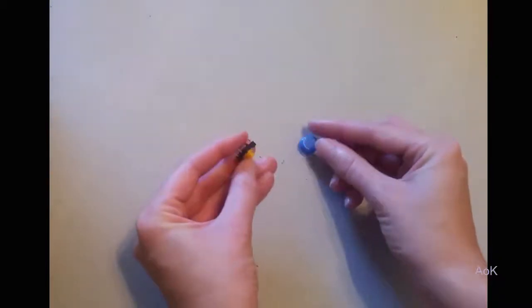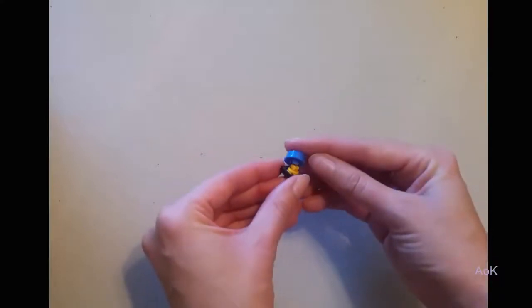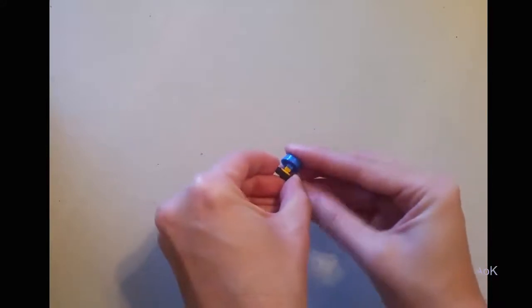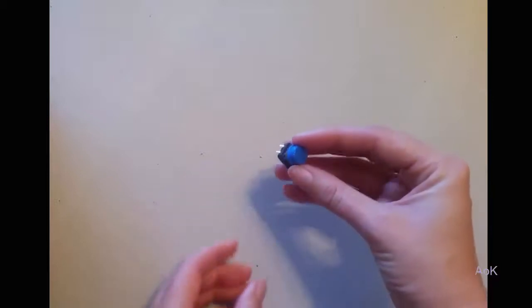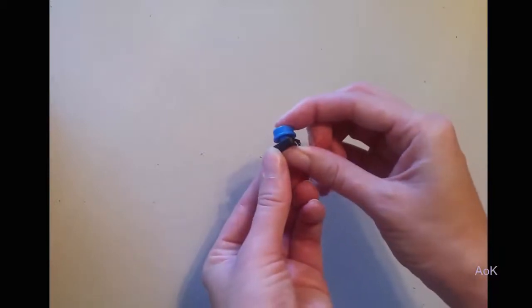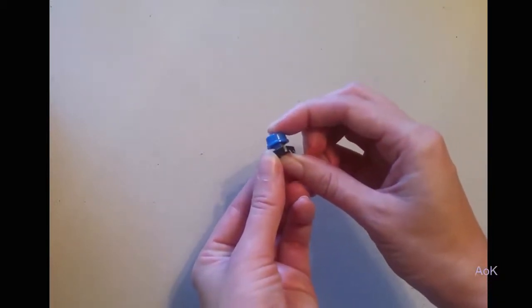Here you have a button. The button has four different legs, and the button can be used to turn your project on or off by hooking it into the circuit in series. When you press the button, the circuit is closed, and when you don't press it, the circuit is open.